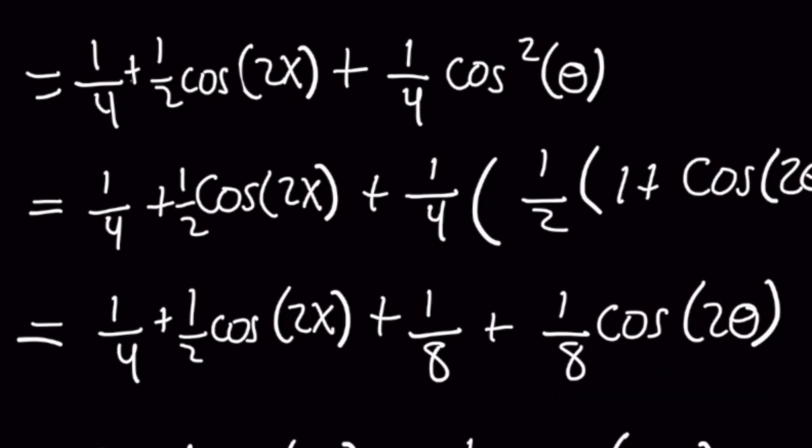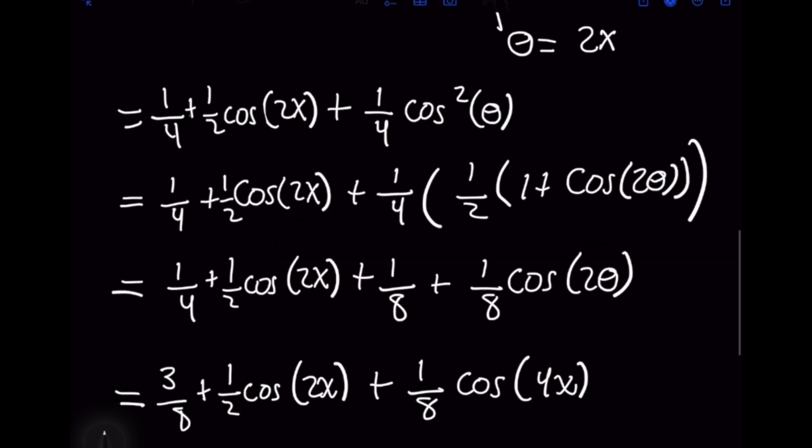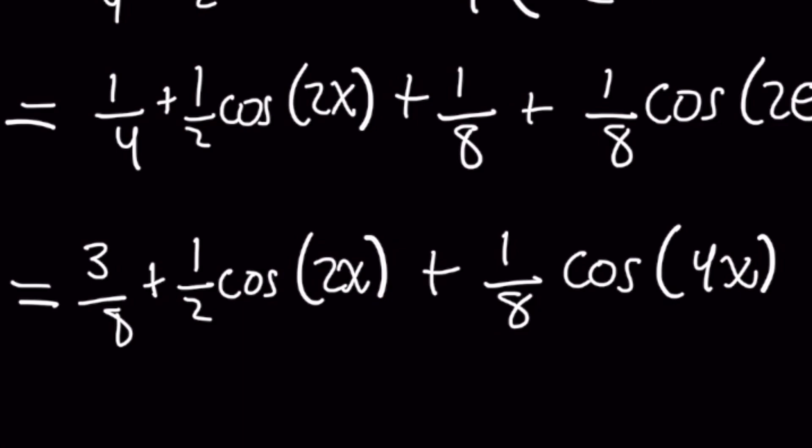We need to remember now to be very careful because we can't have an answer that has both an x in there and a theta. So when you plug back in what theta is, which is 2x, that's going to result in this cosine of 4x term here.